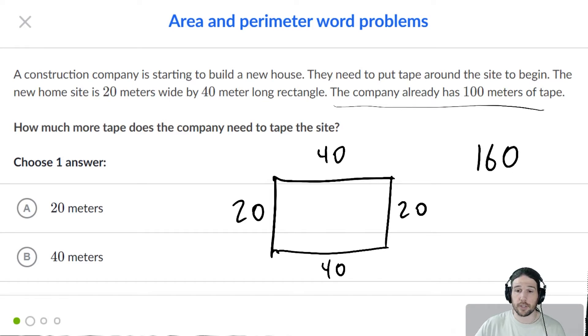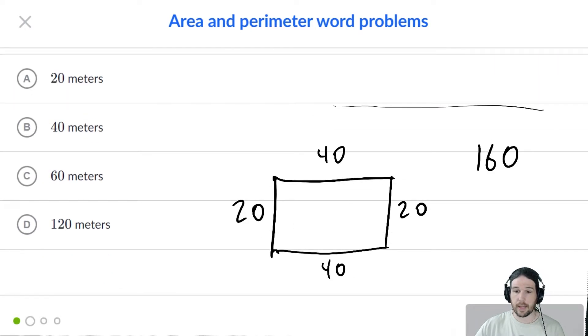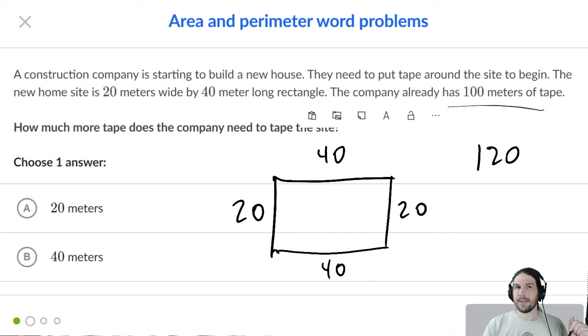And I bet one of the answers, I just bet, oh, it's not. Because it's 120. My counting was wrong. The perimeter is 120. But that's not the answer to the problem. The company already has 100 meters of tape. So we're going to take that perimeter and we're going to take away the 100 that they already have. They don't need to buy that 100 feet. They've already got it.